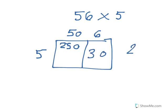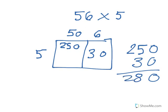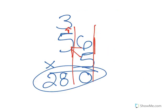And then 5 times 6 is 30. And then you would add the two numbers. And that would get us 280. Oh, cool. Is that what I got also? Yep.